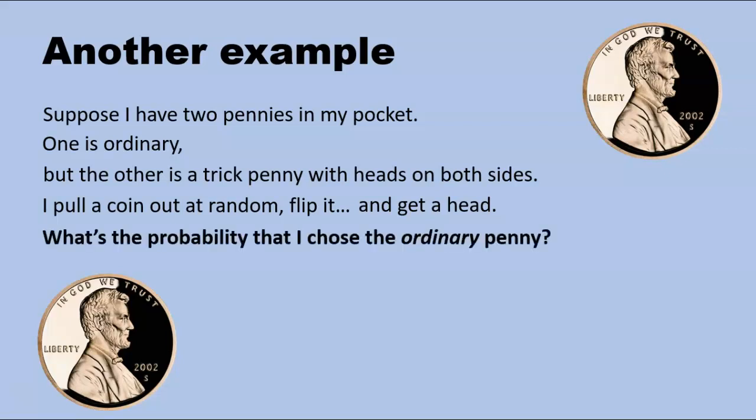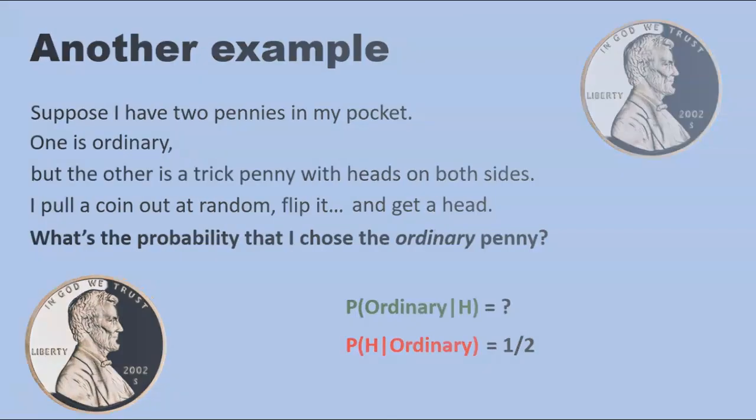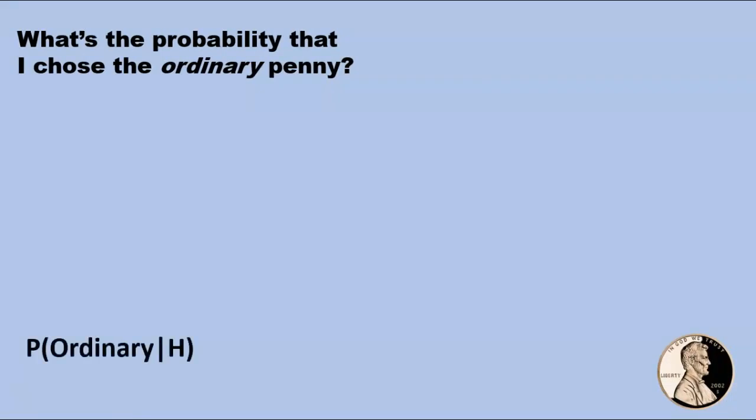Let's begin by translating our question into our new notation for conditional probability. Although it isn't obvious how to find this probability at first, we might take comfort in the fact that we do at least know the reverse probability, the probability of heads given the ordinary coin, which is obviously one-half. So, we might be able to make use of our medical test technique to turn this probability around. At any rate, let us try.